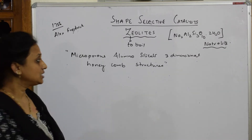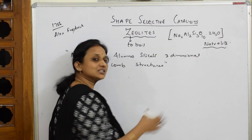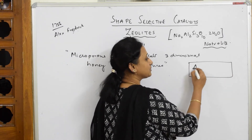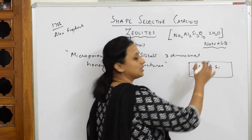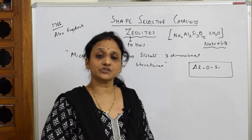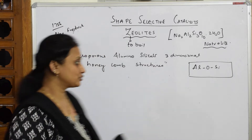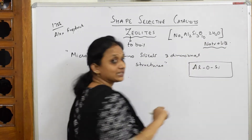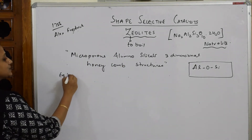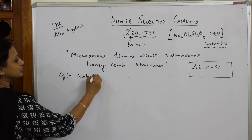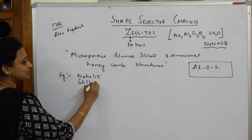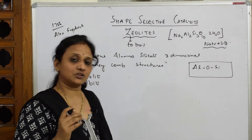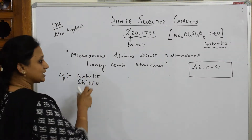In the structure of zeolites, you have a framework where aluminum is linked with oxygen, then linked with silica. There are different varieties of zeolites. One example is the natural zeolite stilbite.